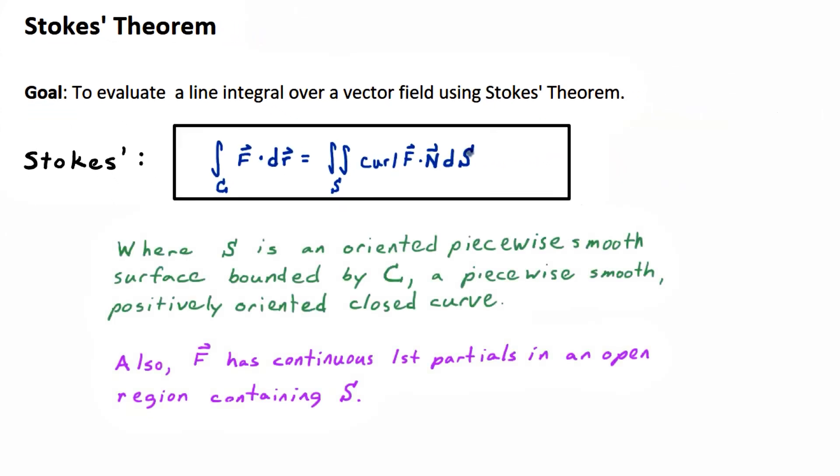This is where S is an oriented piecewise smooth surface bounded by C, a piecewise smooth positively oriented closed curve. F has to be very well behaved, so one way of saying that is F has continuous first partials in an open region containing S.